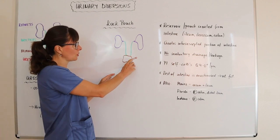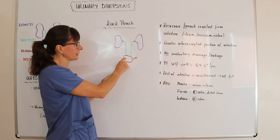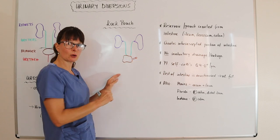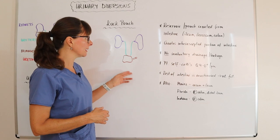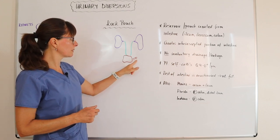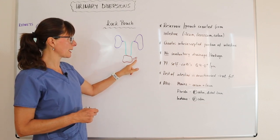And then that stoma is created that comes from the pouch to the outside of the body, to the abdomen, to be able to drain the urine.